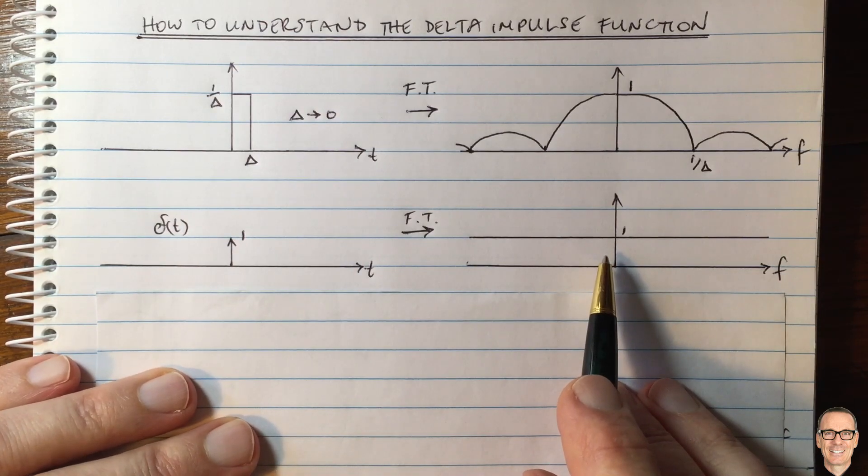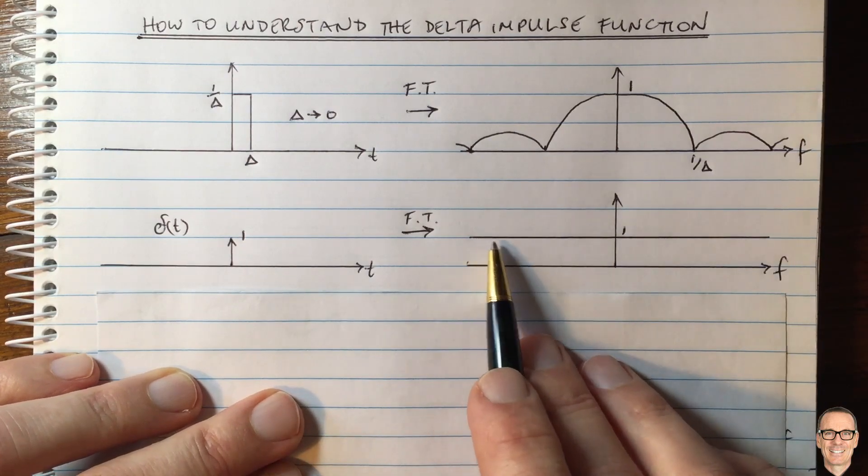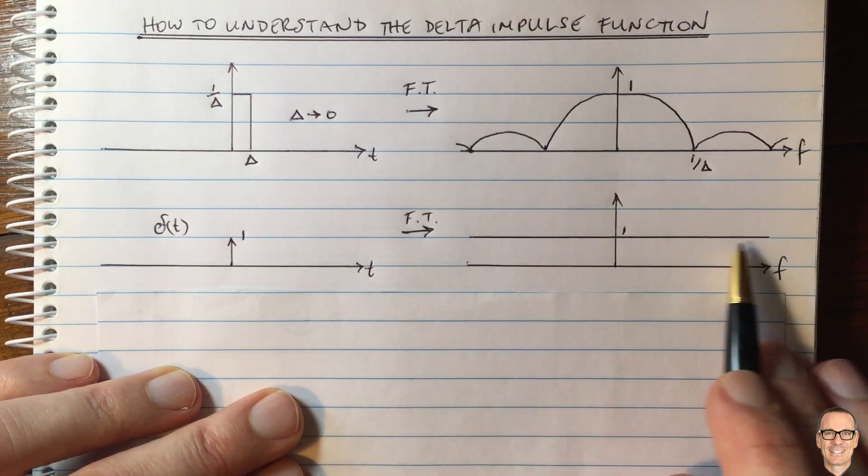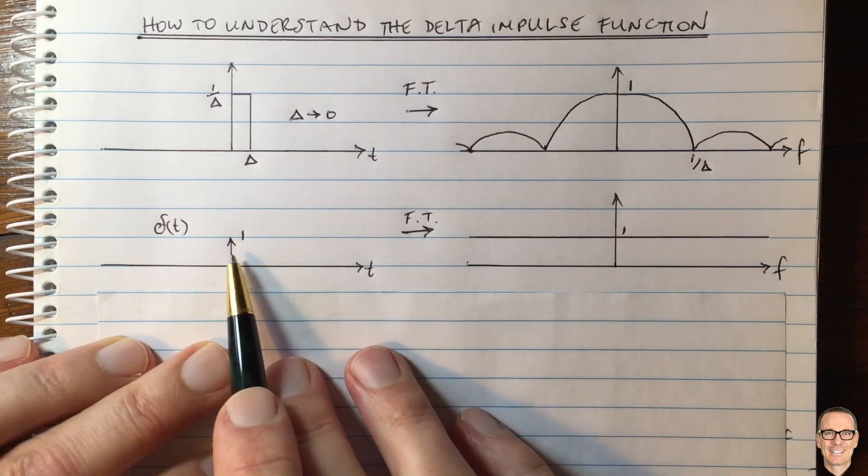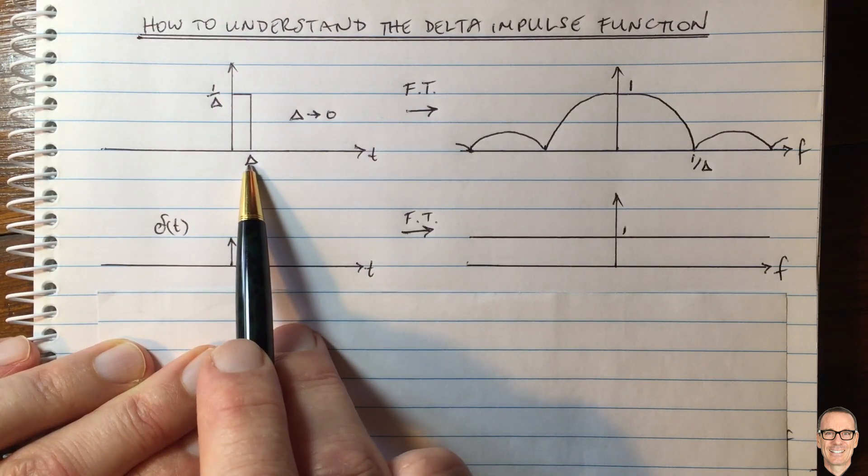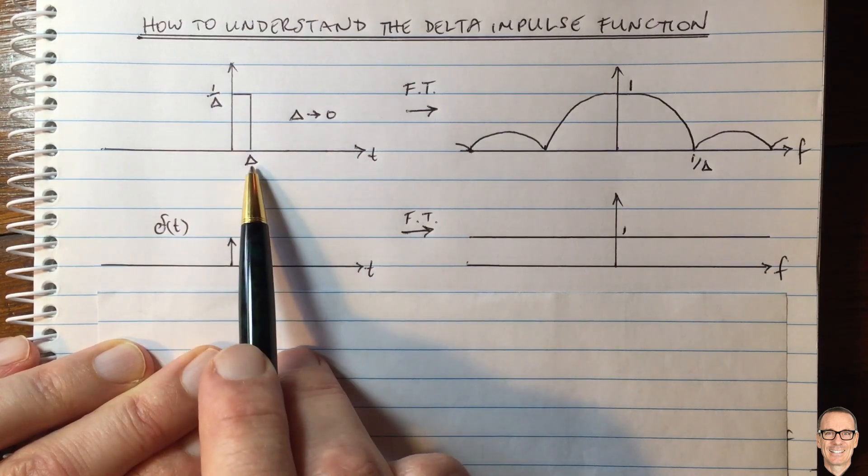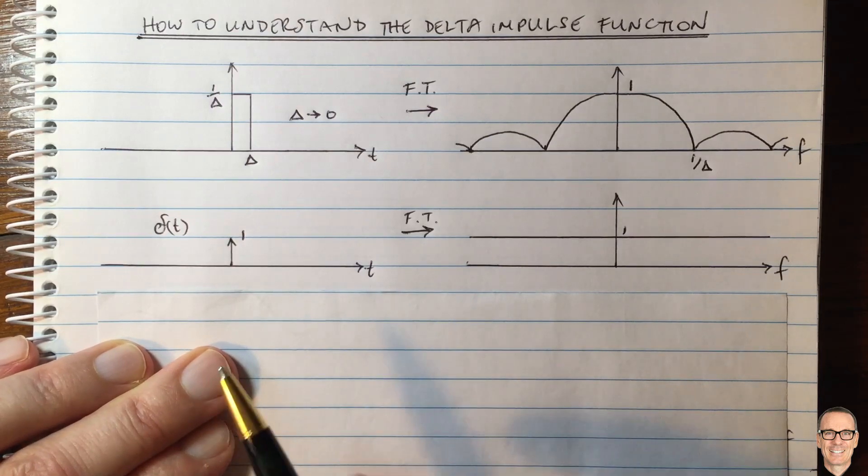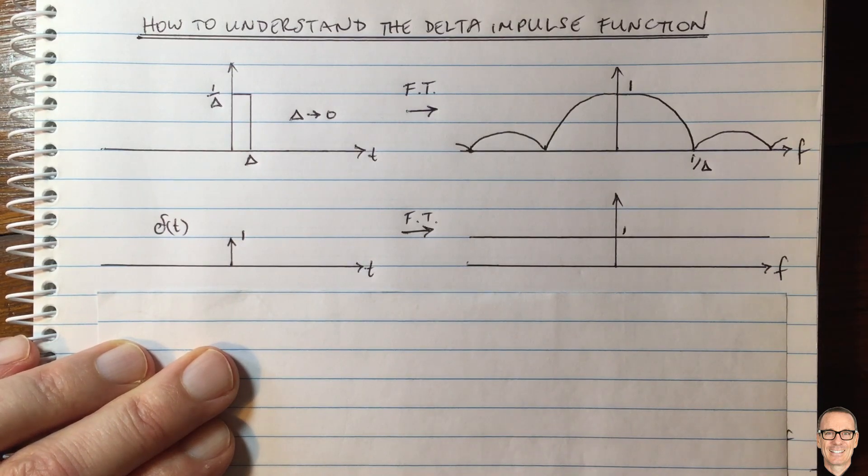The energy of the delta function is infinite. We can see it in the frequency domain, because when you take the square and add up the area from negative infinity to infinity, and this is a straight line, it goes forever. In the time domain, you take the square of the amplitude and multiply by the base. You'll get 1 over delta squared times delta, which is 1 over delta, and as delta goes to 0, that goes to infinity. So the energy of a delta function equals infinity.